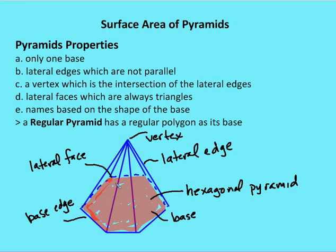It's very easy to compute the lateral surface area of a regular pyramid. But if we don't have a regular pyramid, then we have to construct the lateral surface area of each of the individual triangles to get the entire lateral surface area of the pyramid. So the name of the base determines the name of the pyramid. Lateral edges are not parallel. A vertex is the intersection of the lateral edges. Lateral faces are always triangles but sometimes not congruent. The regular pyramid has a regular polygon as its base.